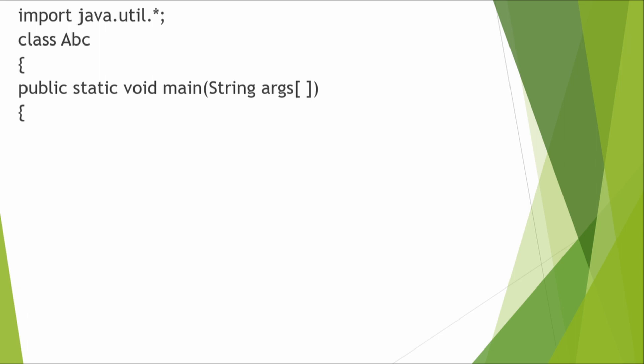We again start with curly braces — we make a block for the main function as well. So here we have two blocks: class and main function. In further programs we'll have more blocks. Inside the main function we write: Scanner in = new Scanner(System.in); Just as we have predefined functions, we also have predefined classes in Java.